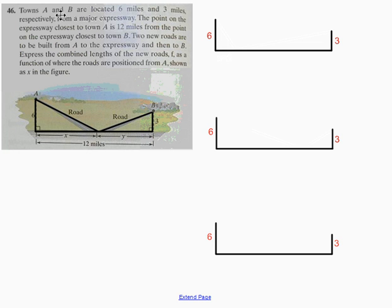To understand this problem and unpack the paragraph, essentially we've got a town three miles away from an expressway that's perfectly straight, and another town that's six miles away from that highway. The objective is to build a road that connects these two towns to the major expressway.